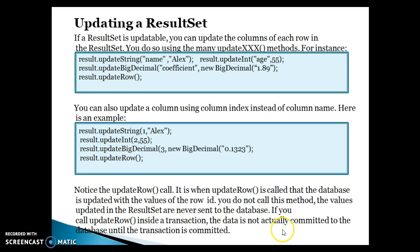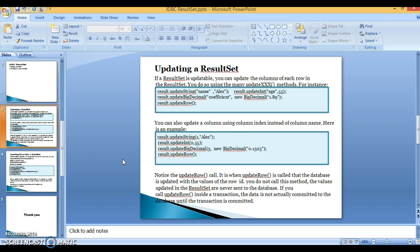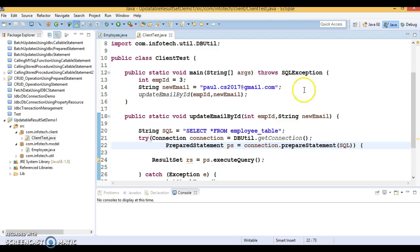If you call updateRow inside a transaction, the data is not actually committed to the database until the transaction is committed. If you are handling the transaction manually — for example, if at the beginning you set connection.setAutoCommit(false) — then you will have to explicitly issue connection.commit() for the changes to be reflected on the database side. That was just the theoretical discussion; let's go for hands-on.